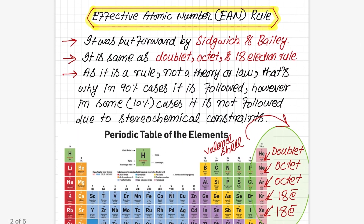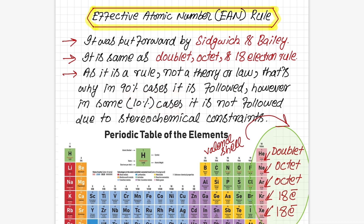Today's lecture is about the Effective Atomic Number rule. This rule was put forward by Sidgwick and Bailey. It is not a theory or a law, so that is why in 90% of cases it is followed, but there are about 10% of cases where the EAN rule is not followed — because of some stereochemical hindrances or constraints, due to which this rule does not apply.